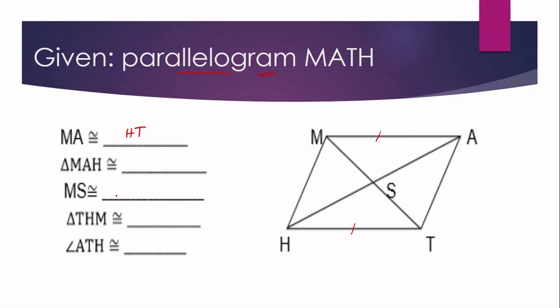Number two: triangle MAH is congruent to triangle THA. The condition that tells us these two triangles are congruent is that each diagonal forms two congruent triangles. Diagonal HA divides quadrilateral MATH into triangle MAH and triangle THA.